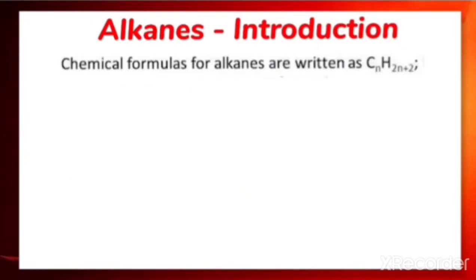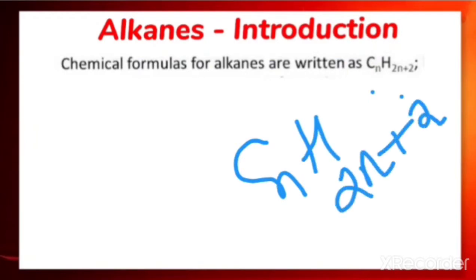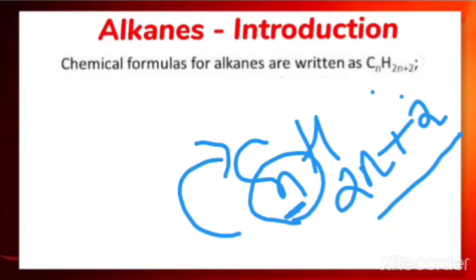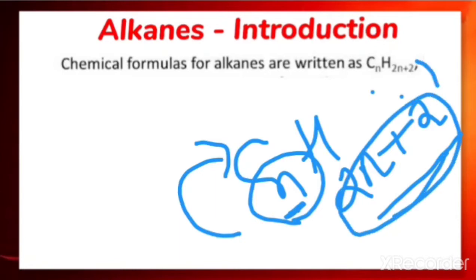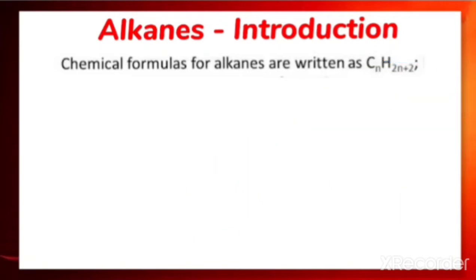The chemical formula for alkanes can be written as CnH2n+2. That is the general formula for the alkane family or homologous series, where n stands for the number of carbon atoms and 2n+2 stands for the number of hydrogen atoms in the molecule.